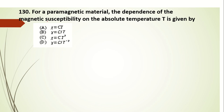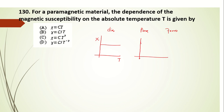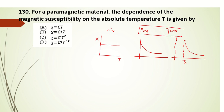Question 130: for a paramagnetic material, what is the dependence of magnetic susceptibility on absolute temperature T? For a diamagnetic material, susceptibility is constant — independent of temperature. For paramagnetic material, susceptibility decreases with temperature. For ferromagnetic, there is no variation until the critical temperature. The answer is B: chi equals C divided by T, meaning susceptibility is inversely proportional to temperature.